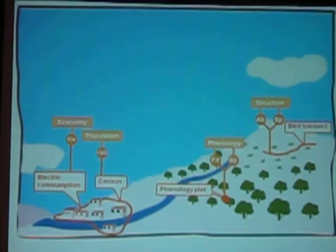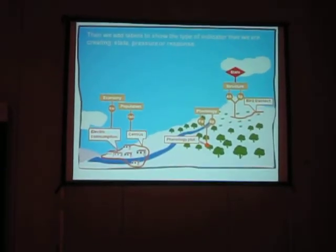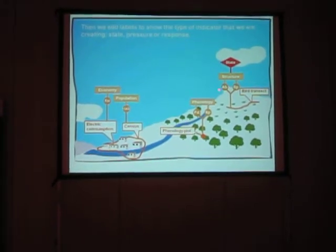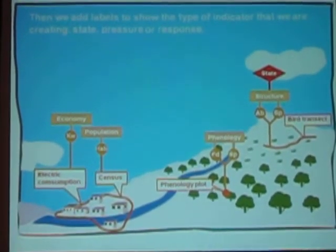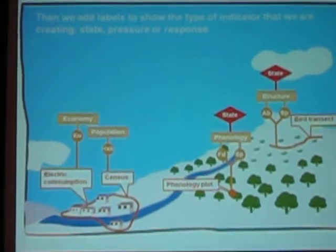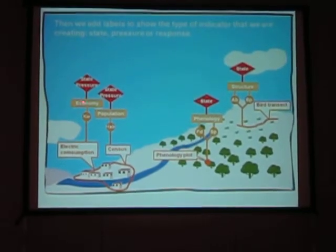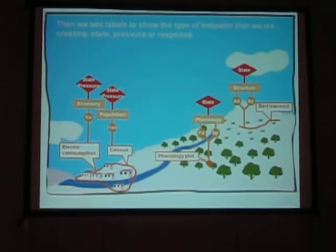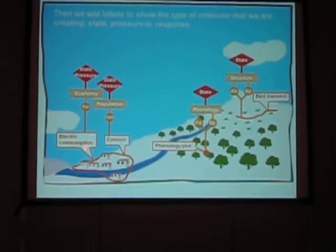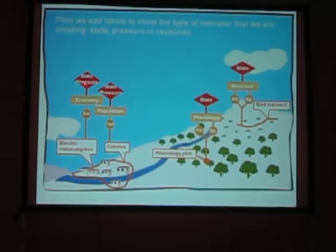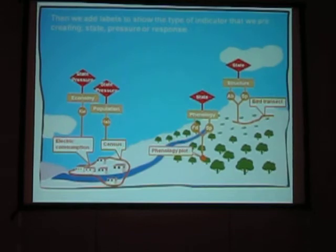The next step is to add labels showing what kind of indicator we are creating. For example, if we measure bird abundance related to the structure of the system, we are creating a state indicator. These particular examples are very interesting because some variables that affect aspects of the socio-economical system can behave as state indicators for the socio-economical part, but also as pressure indicators for the ecological part of the system — which adds an important layer of complexity.